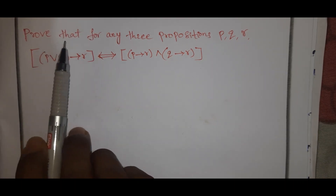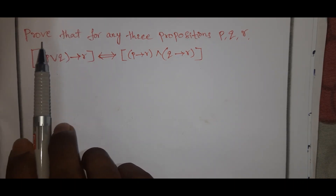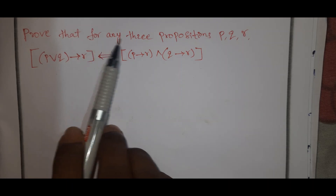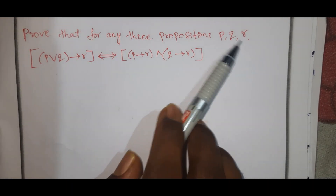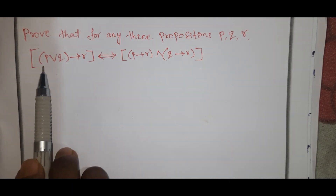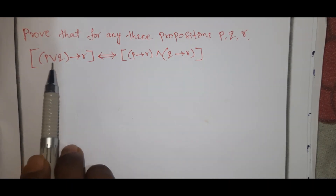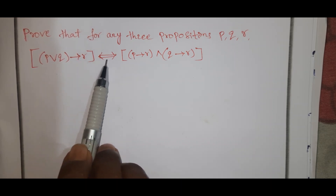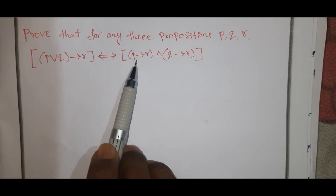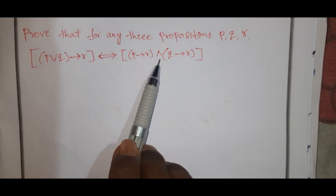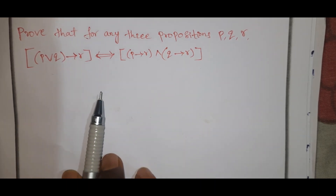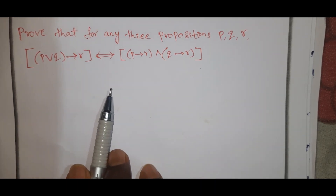Prove that this is a very important problem. Prove that for any three propositions P, Q, R: (P→R) ∧ (Q→R) and (Q, R). We have three propositions here.